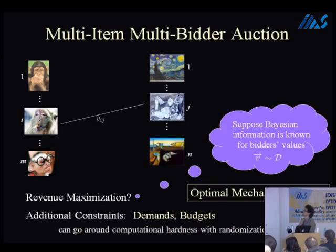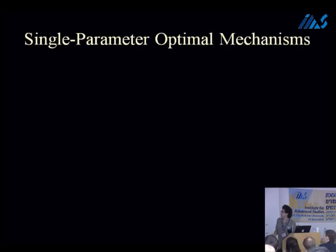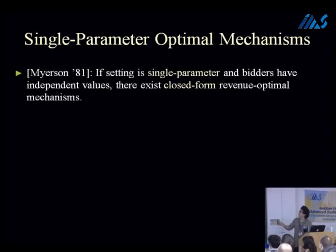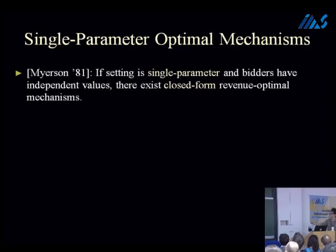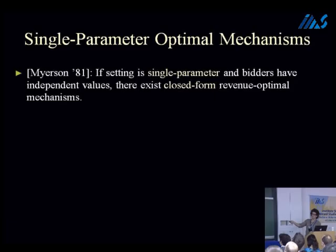As most of you know, it goes back to Myerson, who basically proved that if you're in a single parameter setting and the bidders are independent, then there is a closed form revenue-optimal mechanism. Without this closed form, it's sort of like a statement about the existence of an optimum, so it's not very interesting. Let me address what it means to be closed form, and first what is single parameter, because I'm going to be talking about multi-parameter settings.